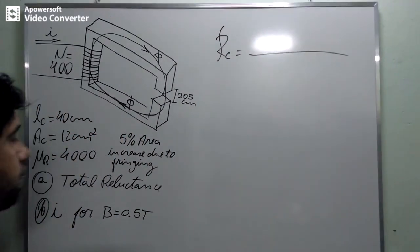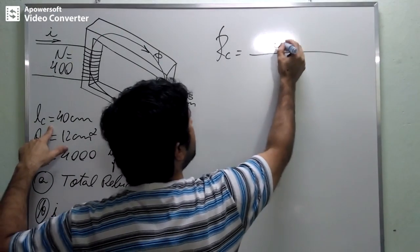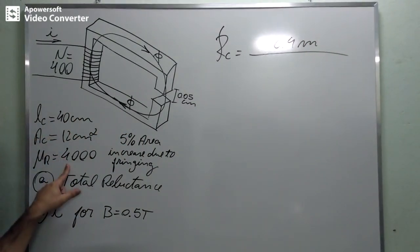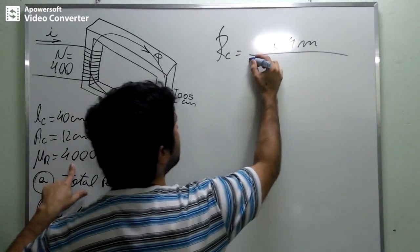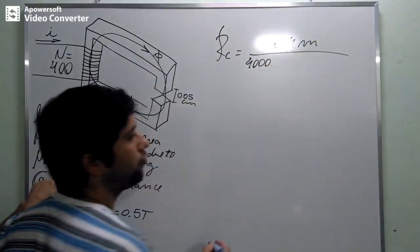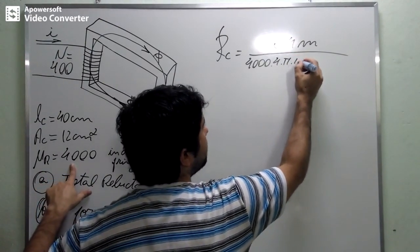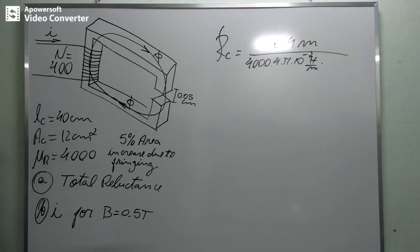We simply multiply LC. Here, it was given to us as 40 centimeters. We are going to pass it to meter and it becomes 0.4 meters. Now we are going to use the permeability. The permeability of iron is 4000 times that of free space. And the permeability of free space is 4π times 10 to the minus 7 Henry per meter.